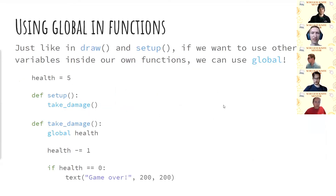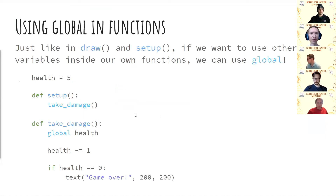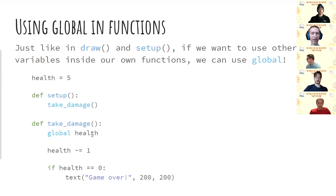One final note: if you want to use global variables inside a function — for example, a take_damage function for a character with hit points as a global variable — whenever the character is supposed to take damage, you can call that function. Because we're updating a global variable, we use the global keyword to indicate that health refers to the global variable. Then we can subtract one from it, and check if health is zero for game over.